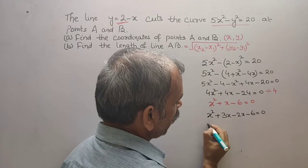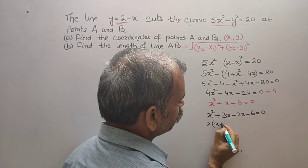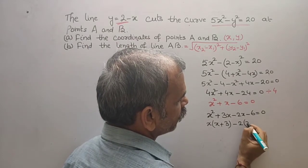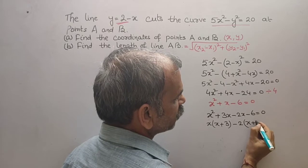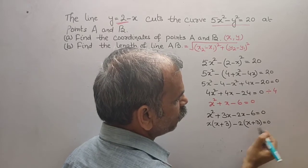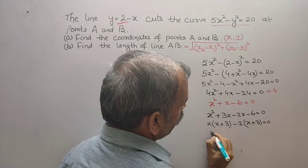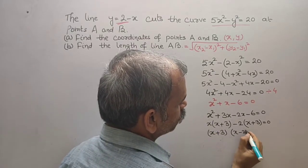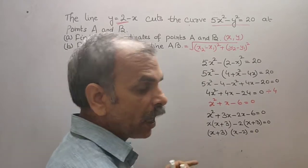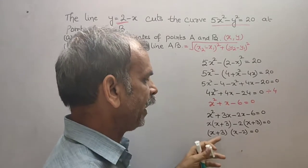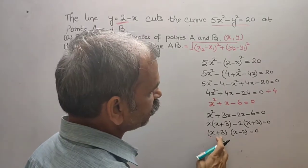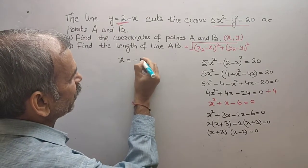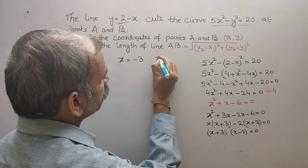Now in this two, x is common. We will take x + 3. In this two, -2 is common, that is your x, x + 3, that gives you 0. Now write the factors: (x + 3)(x - 2), that gives you 0. Now the values for x is what? So here you will get x = -3, x = -3, and here you will get x = 2.